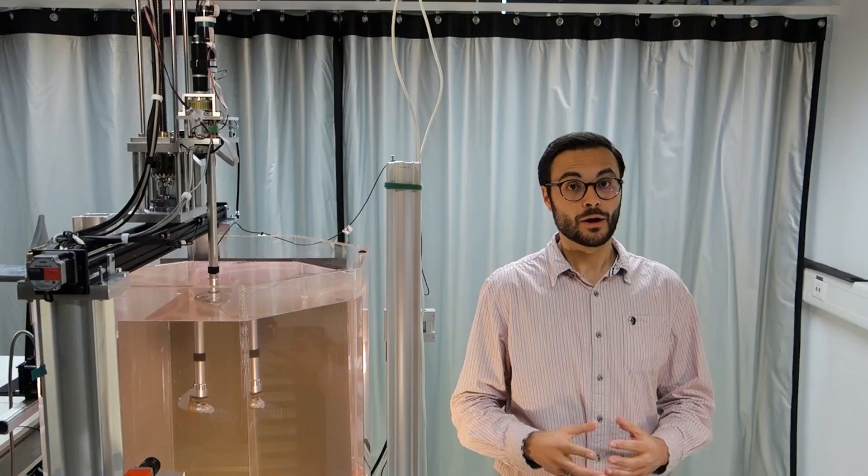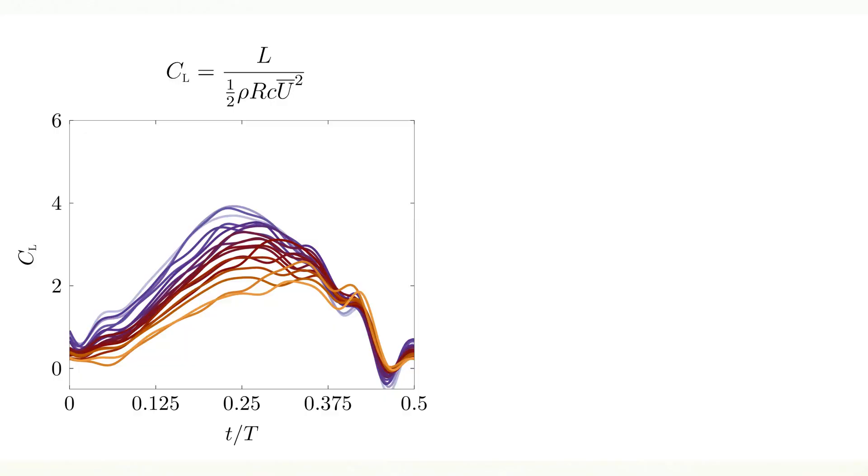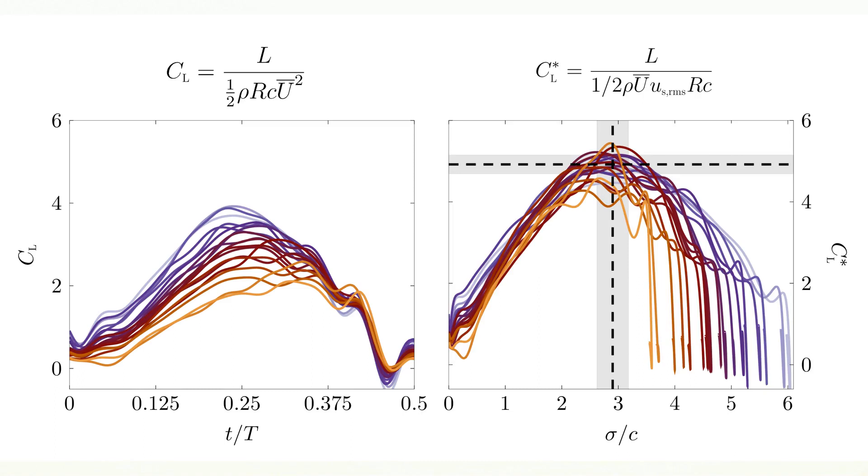We can also apply the same scaling we previously applied for the circulation to the lift data we obtained. Here we see the lift coefficient for all Pareto optimal kinematics. The same trend we observed for the circulation can be observed here. All maxima align on one non-dimensional time around three and reach the same magnitude of around five when normalized by the shear layer velocity.